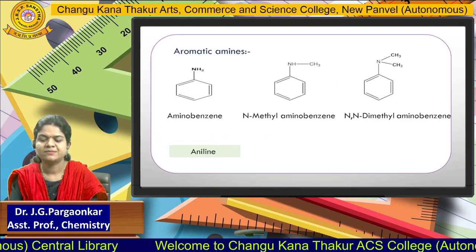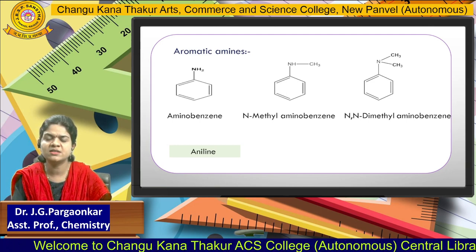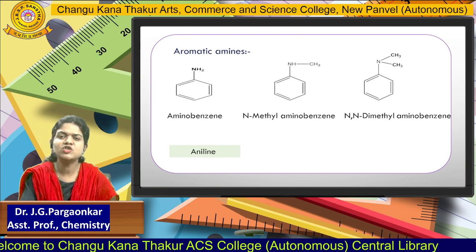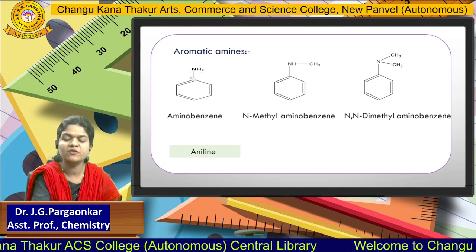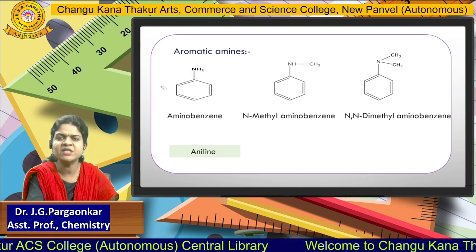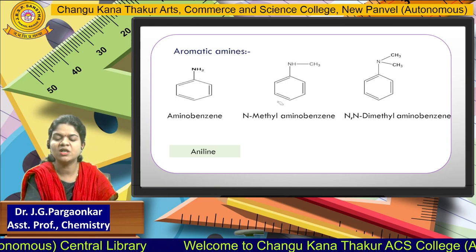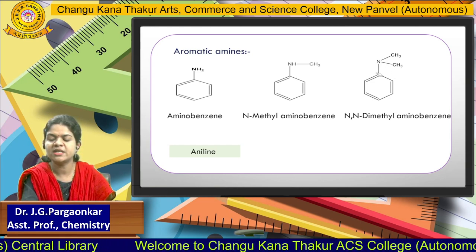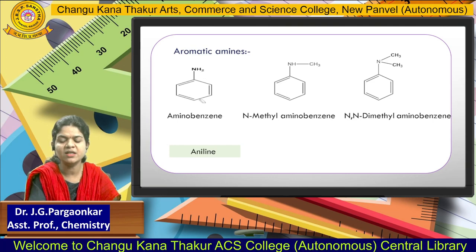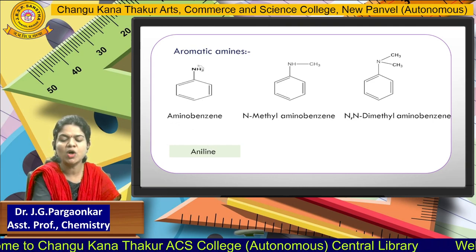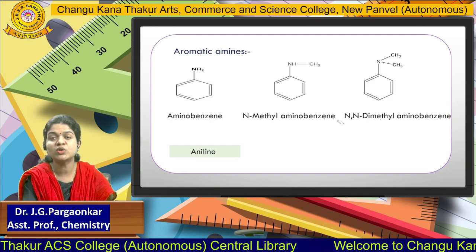Now see some examples of aromatic amines. An aromatic amine is simply when the NH₂ group is attached to the phenyl ring — the benzene ring. When the NH₂ group is attached to the phenyl ring, the IUPAC name is aminobenzene, using the prefix 'amino' followed by 'benzene'.